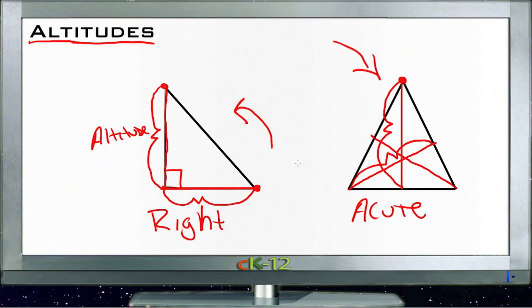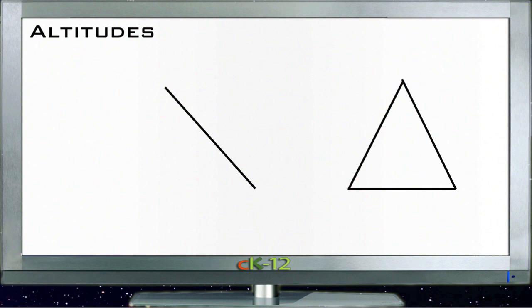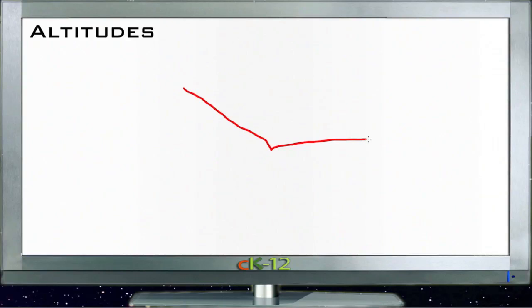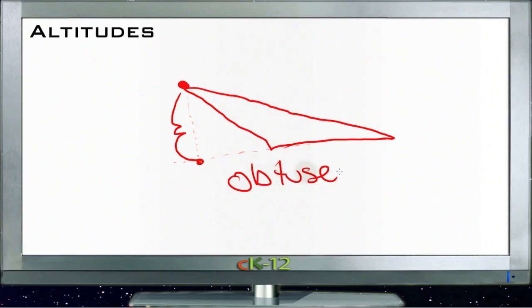If you have a right triangle, then the altitudes of the triangle are two of the legs. And finally, if you have an obtuse triangle, then the altitude can actually be outside of the triangle. If we consider this our base here, then our altitude actually runs from over here down to that base right here, so that altitude actually runs outside of the triangle.